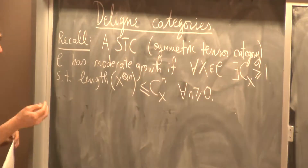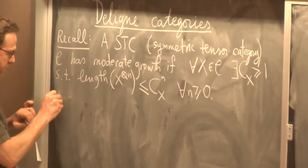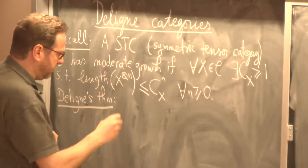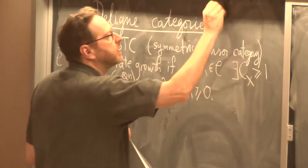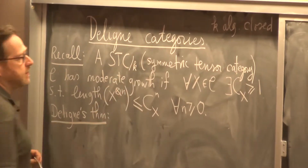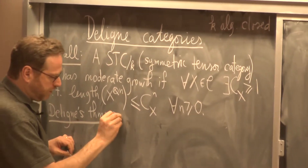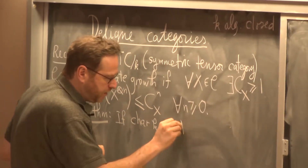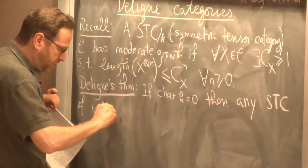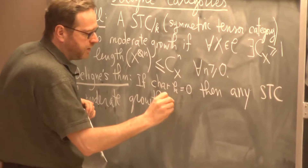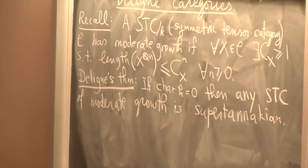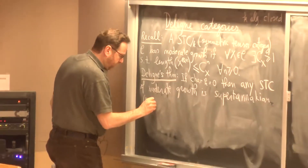The Linn-Milne theorem states the converse is also true in characteristic zero: if the characteristic of k is zero, then any symmetric tensor category of moderate growth is super-Tannakian, meaning it is realized as representations of a supergroup.